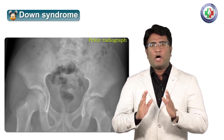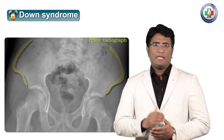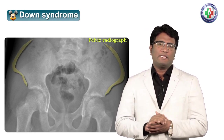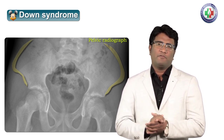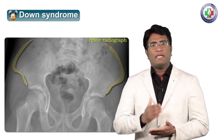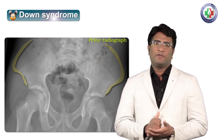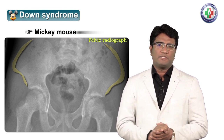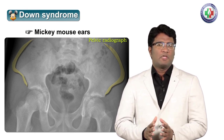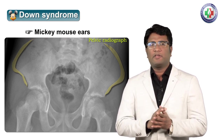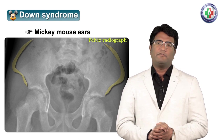Another important site to remember this Mickey Mouse appearance is on a pelvic radiograph. On a pelvic radiograph, the outward flaring of the iliac wings resembles the ears of a Mickey Mouse. This outward flaring of the iliac wings is seen in association with Down syndrome and also resembles the Mickey Mouse ears. So, Mickey Mouse appearance on the pelvic radiograph is suggestive of Down syndrome.